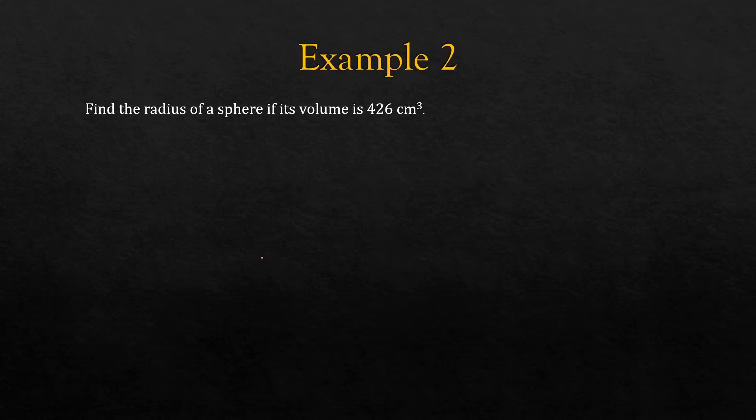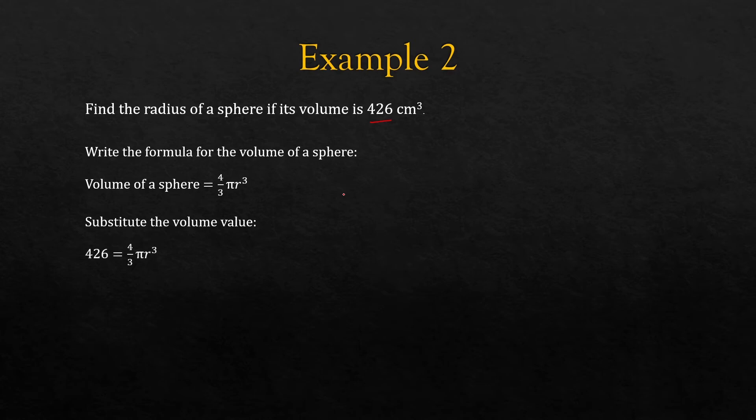Example 2: find the radius of a sphere if its volume is 426 cubic centimeters. So we write the formula for the volume of a sphere, 4/3 pi r cubed. Substitute the volume as 426 here. And we need to rearrange this formula. So we want the radius.